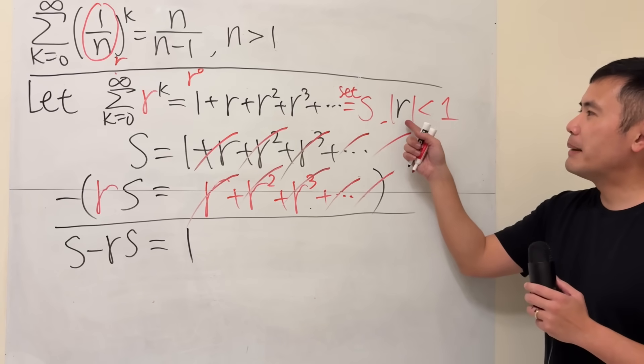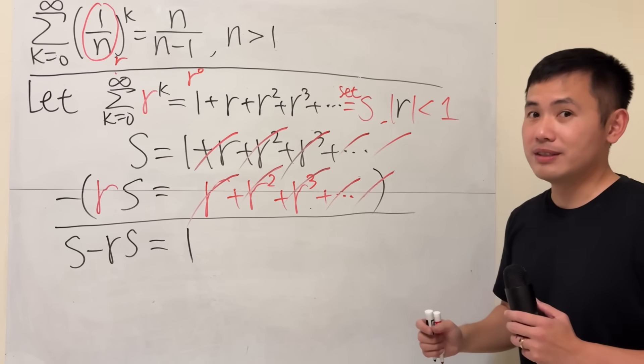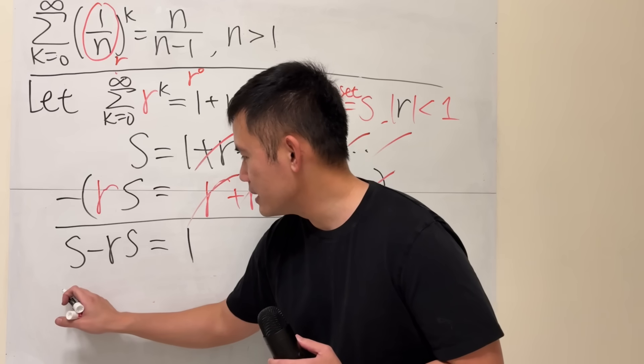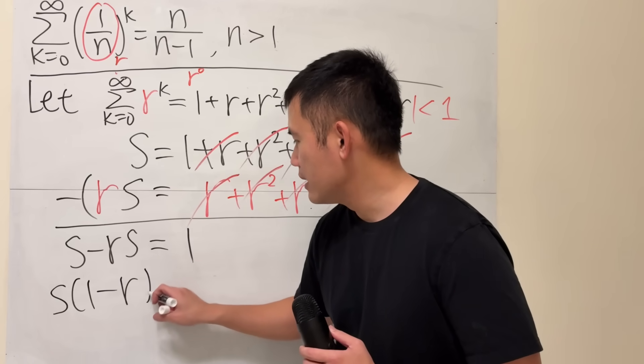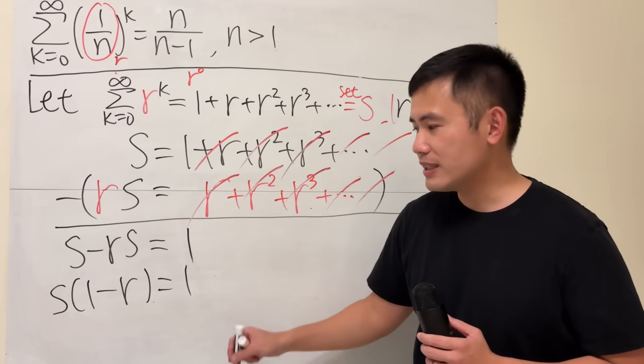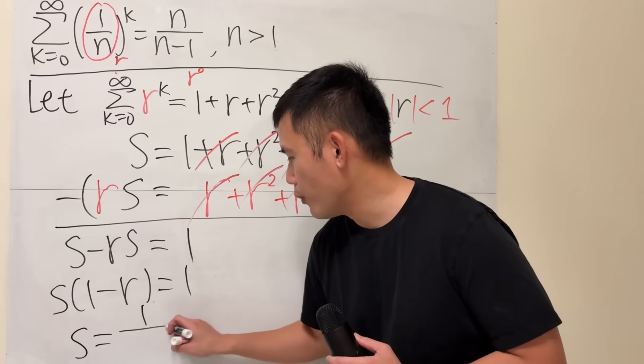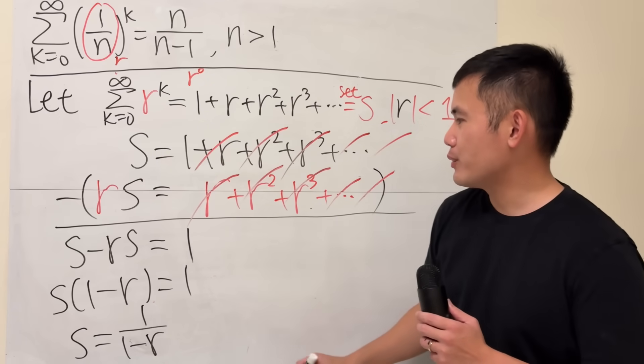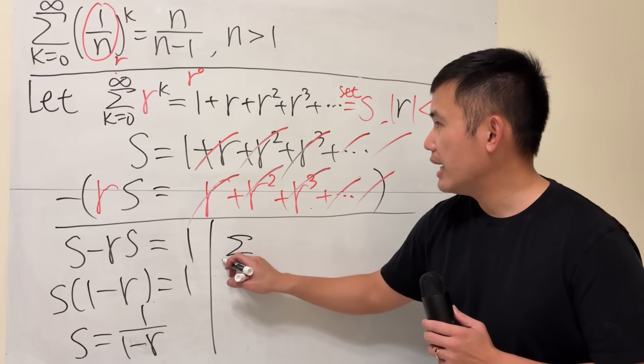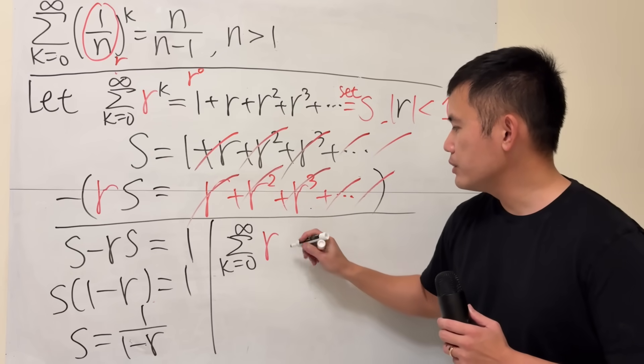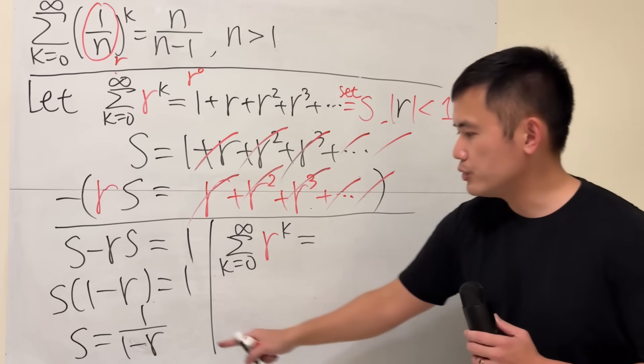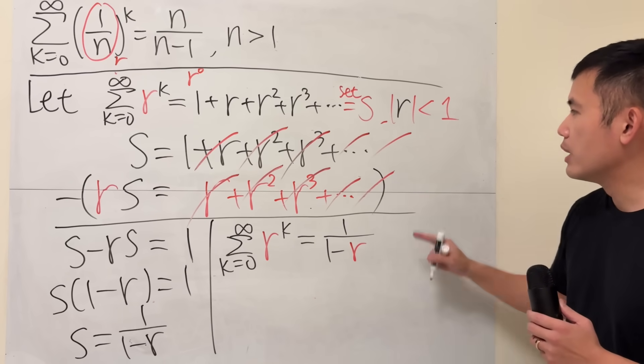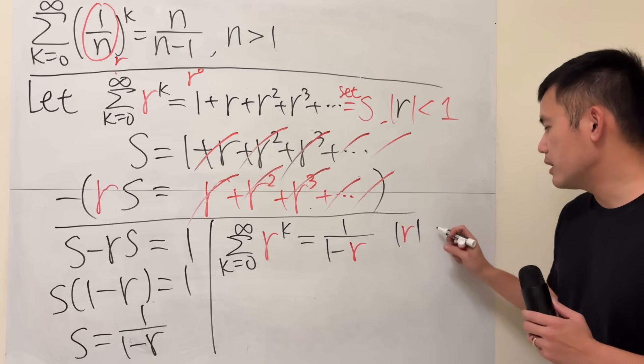And remember, we do have the condition that absolute value of r has to be less than 1 in order for this to work. And then right here, we still have to figure out what s is. Factor it out. And then we have 1 minus r. This is going to be 1. And then divide this to both sides. You see, s is 1 over 1 minus r. With that being done, s is that right here, right? So we can conclude that the summation, as k goes from 0 to infinity of r to the k's power is equal to s, which is just 1 over 1 minus r. And in order for this to be true, as I mentioned it right here, we will have to say absolute value of r is less than 1.